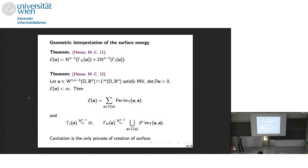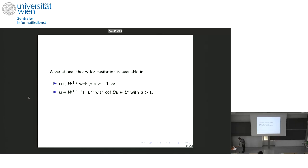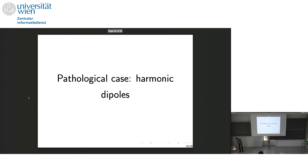In the singular case — but still well-controlled — an existence theory is available for p greater than n minus one, or for p equals n minus one with equi-integrability of the cofactor, meaning q greater than one. Any equi-integrability condition will work: Orlicz spaces like L log L or similar. Now we turn to the really pathological case of harmonic dipoles, starting with the example of Conti and De Lellis.